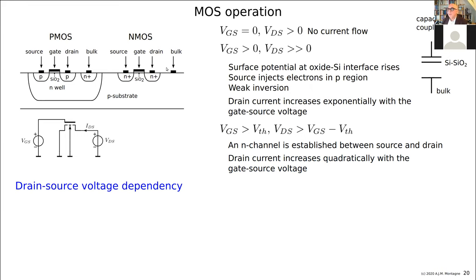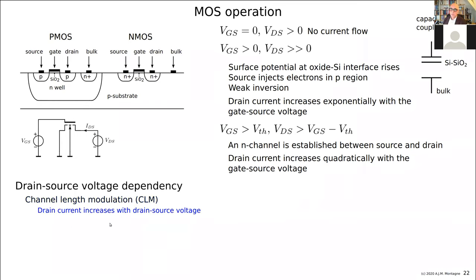There is also a dependency on the drain voltage. Around the drain there is a depletion layer, and if we increase the drain voltage the width of the depletion layer grows a little, which means the channel length reduces slightly and the current increases slightly. This is called channel length modulation — CLM. So the drain current increases with drain-source voltage. If you go beyond the allowed value you get breakdown, which is quite destructive.